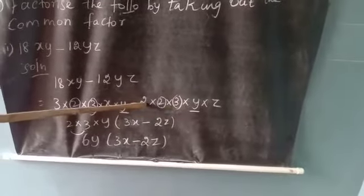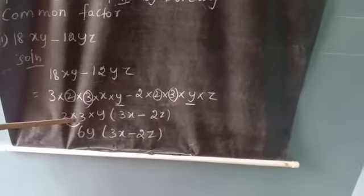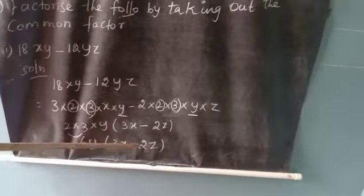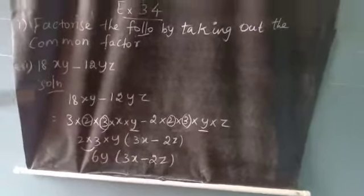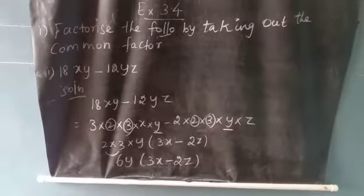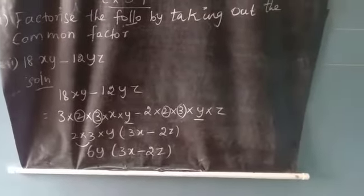Second term: 2 × z, so 2z. Therefore, 6y(3x - 2z). The factorization of 18xy minus 12yz is equal to 6y(3x - 2z). Thank you.